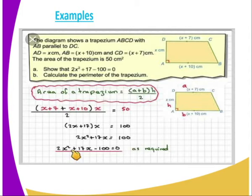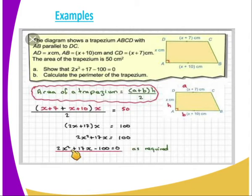So with that, we can solve the equation. We multiply both sides by 2, and we get (2x + 17) in the bracket. Then expanding the bracket, we get 2x² + 17x equal to 100. Finally, we end up with 2x² + 17x − 100 = 0. We have shown what we were expected to form. From there, we can solve for x and finally get the perimeter.